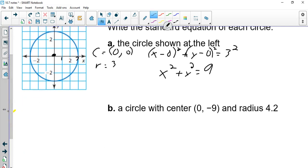Now, what about a circle with its center at 0, negative 9 and a radius of 4.2? Well, we're just going to do the same thing. I'm going to do X minus 0 squared plus Y minus negative 9 squared equals 4.2 squared. So this simplifies to X squared. This simplifies to Y plus 9 squared and 4.2 squared is 17.64. That's the equation of that circle.